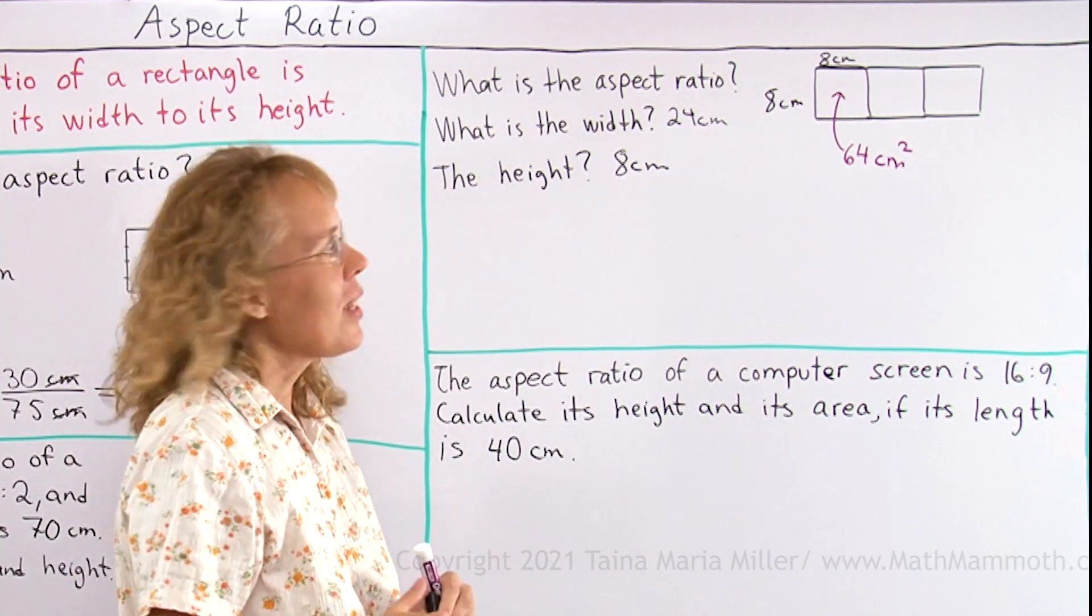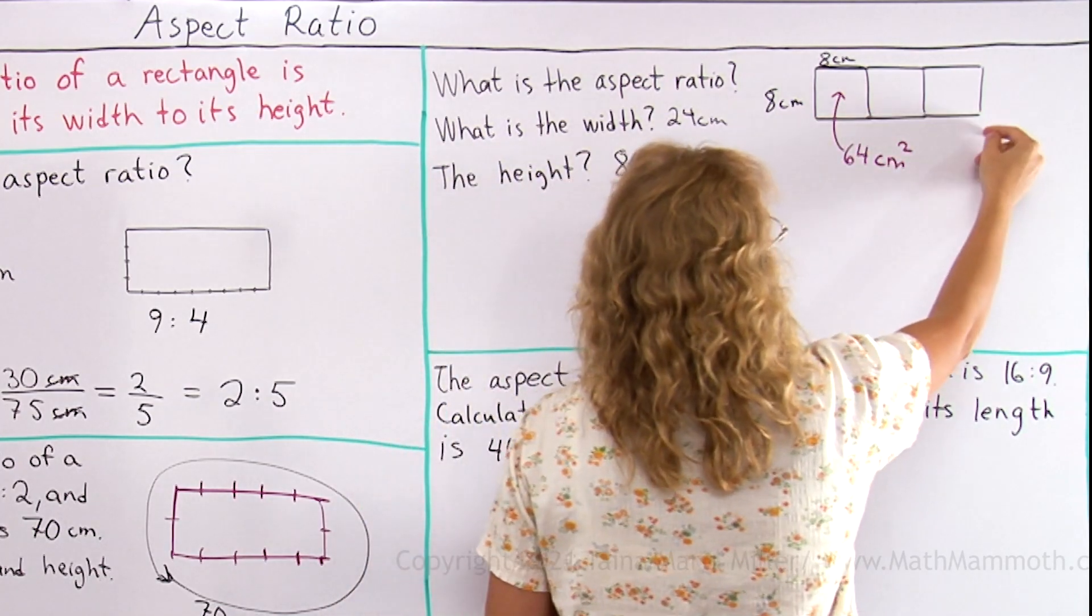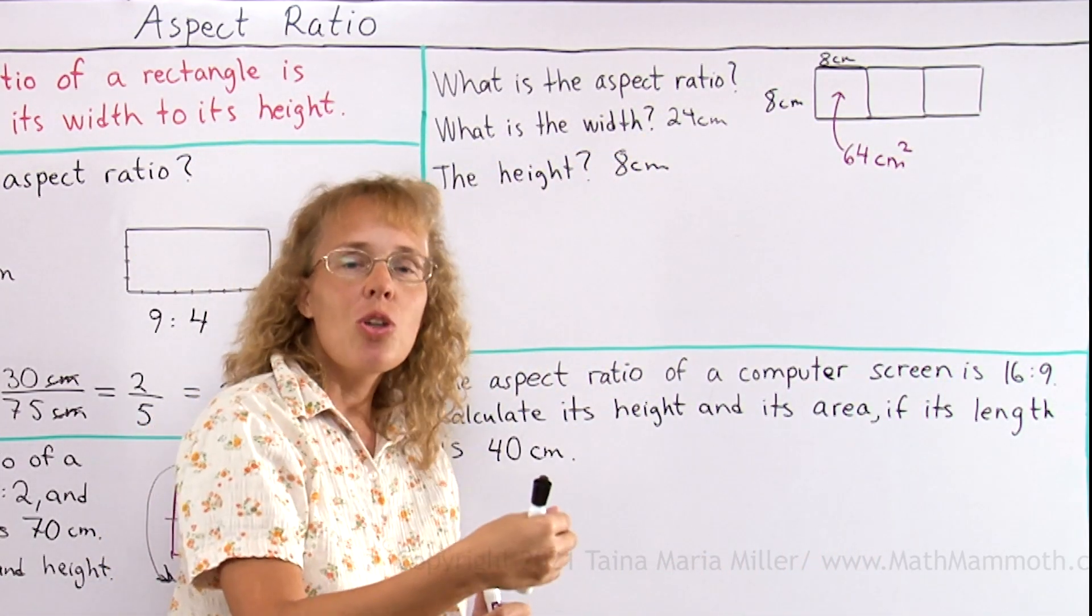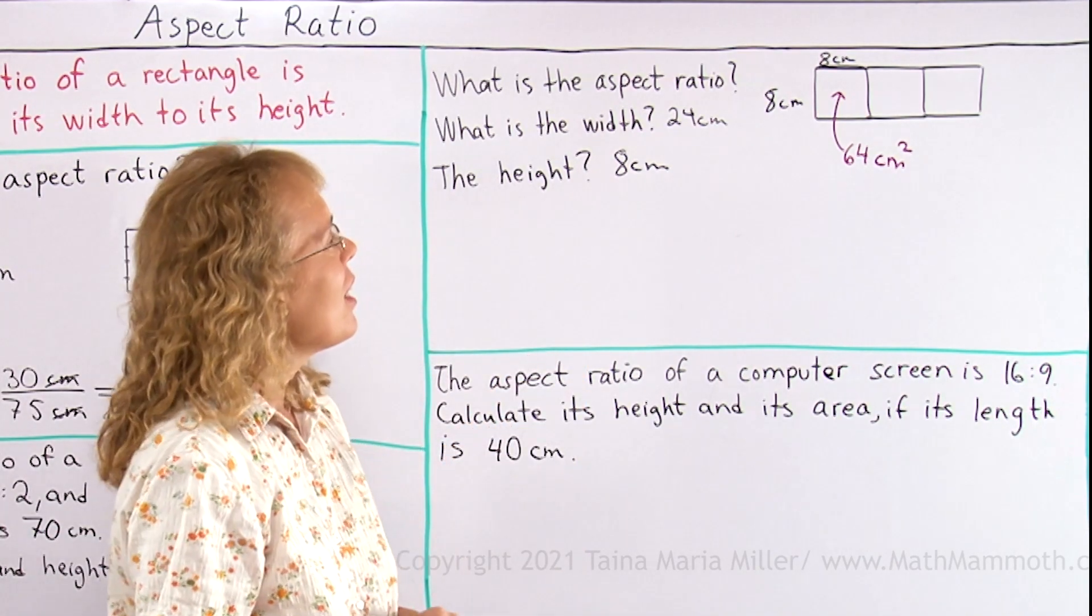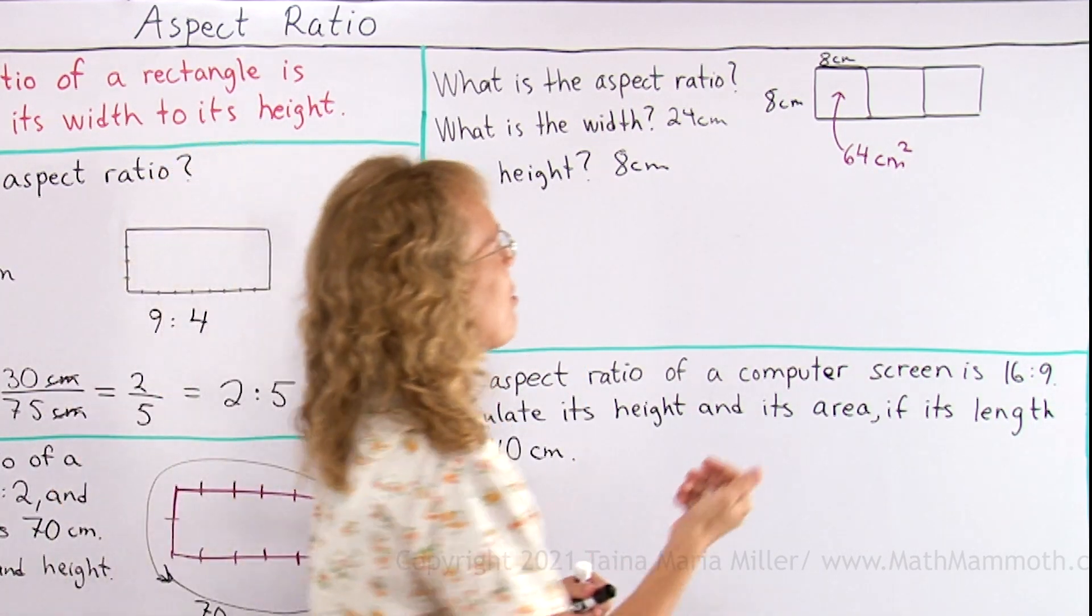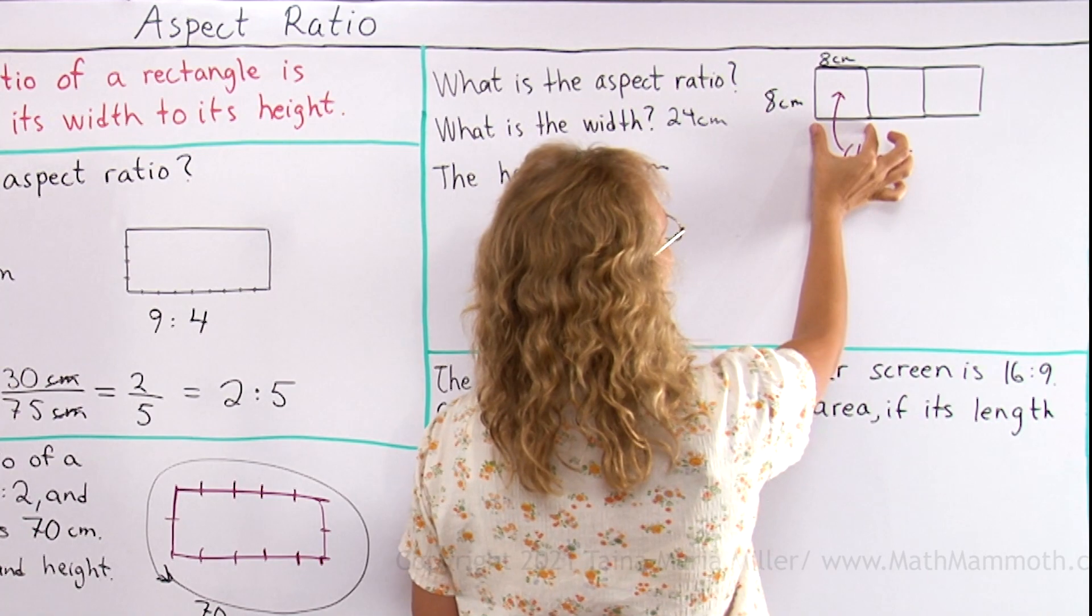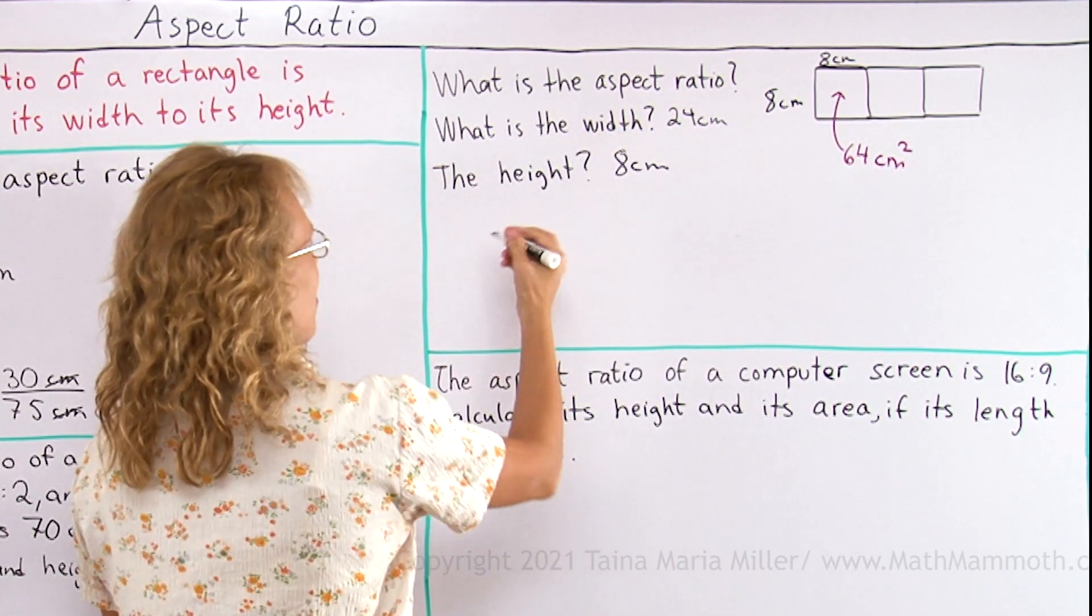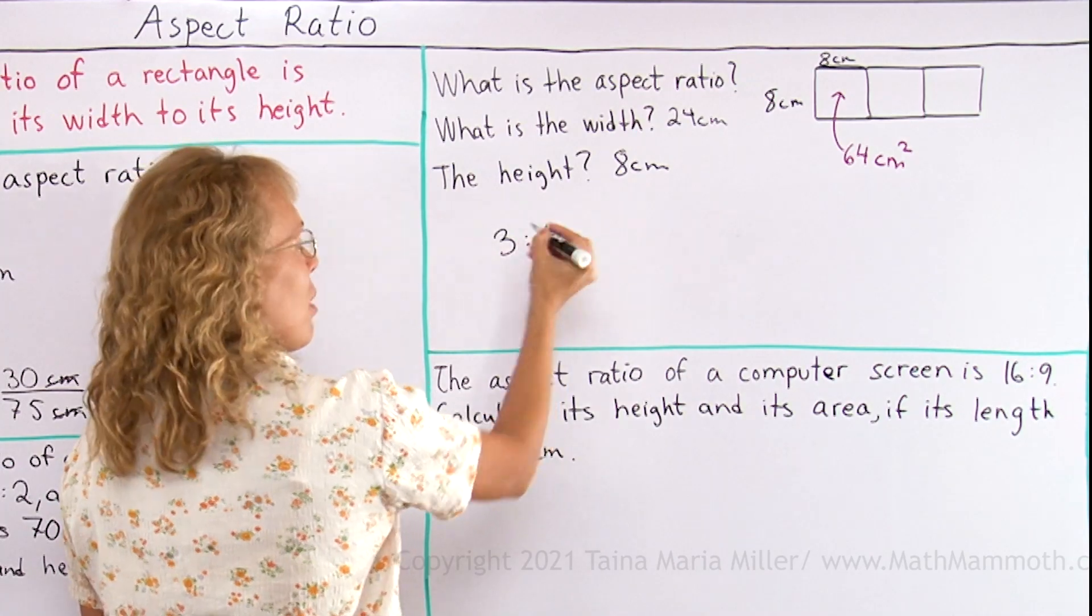What is the aspect ratio? Okay, I'll just look at this and this. So I could think that the aspect ratio will be 24 to 8. But I can also just look at the picture, you know, think of this as my unit and there's three units this way and one that way. So the aspect ratio is just 3 to 1.